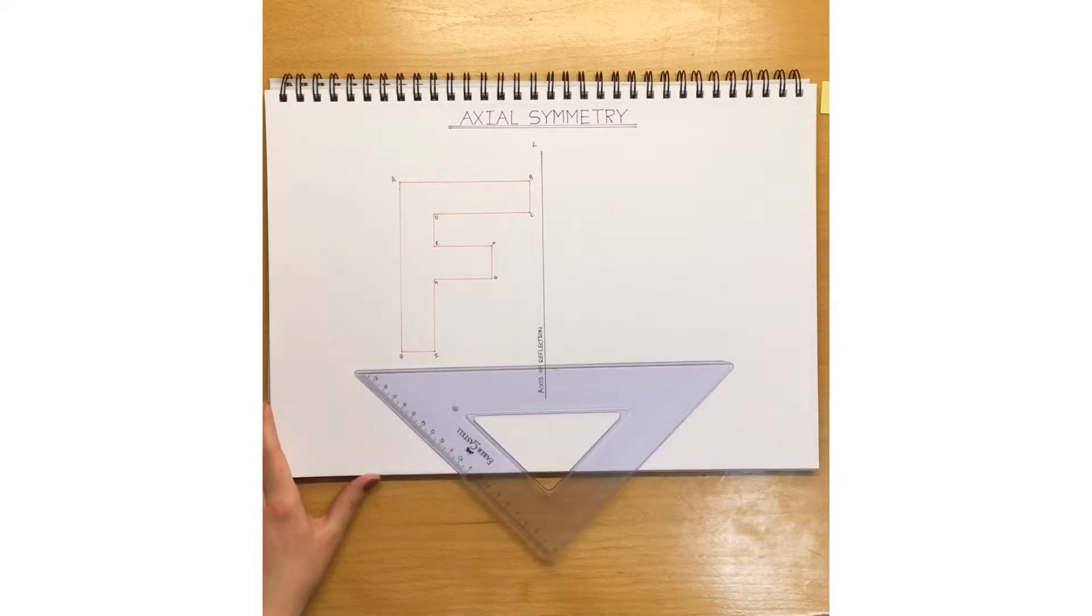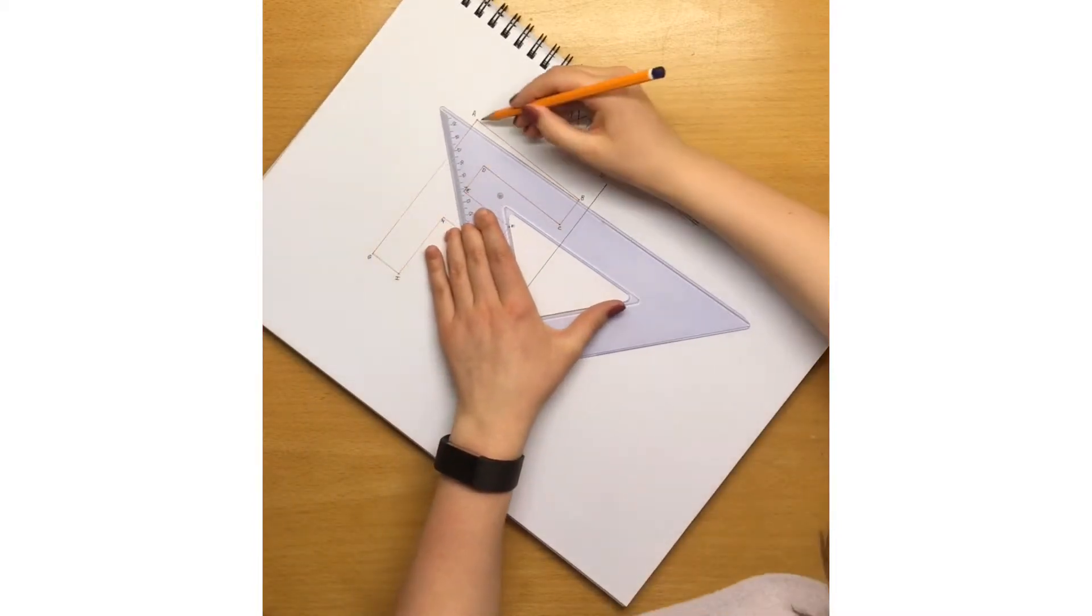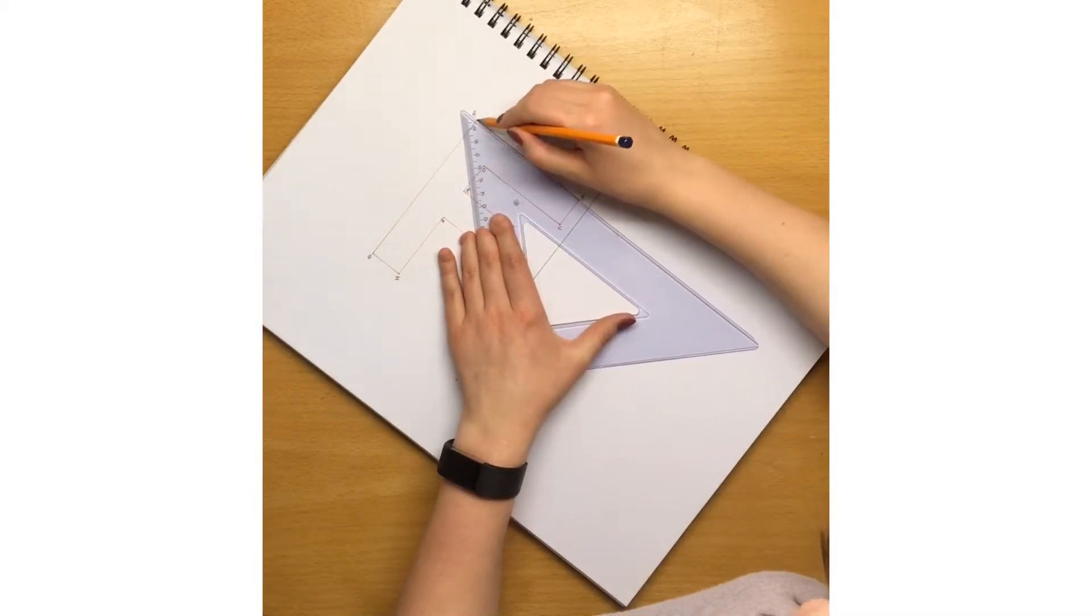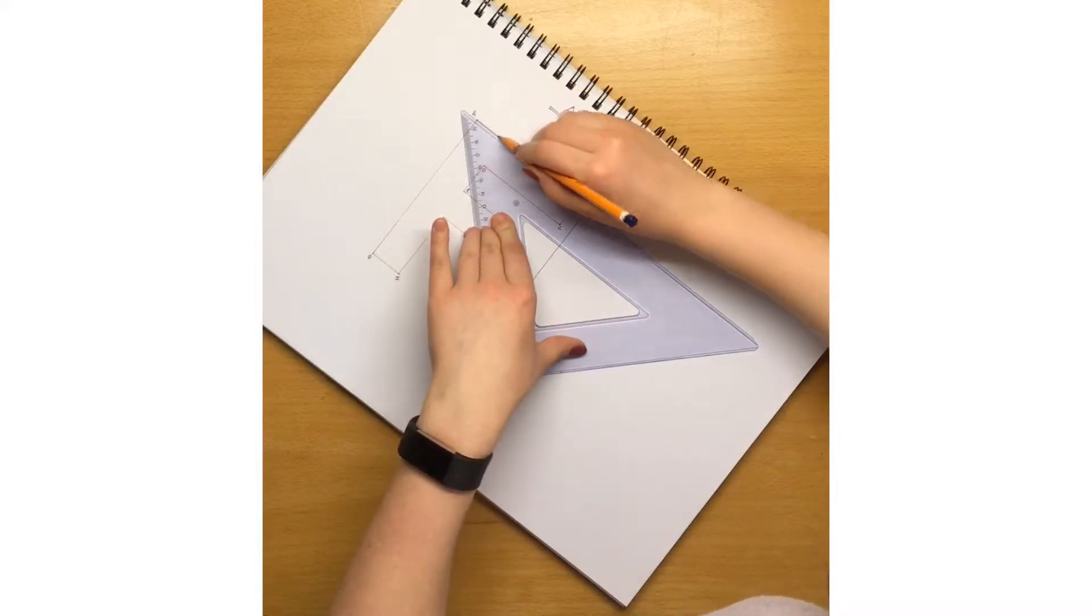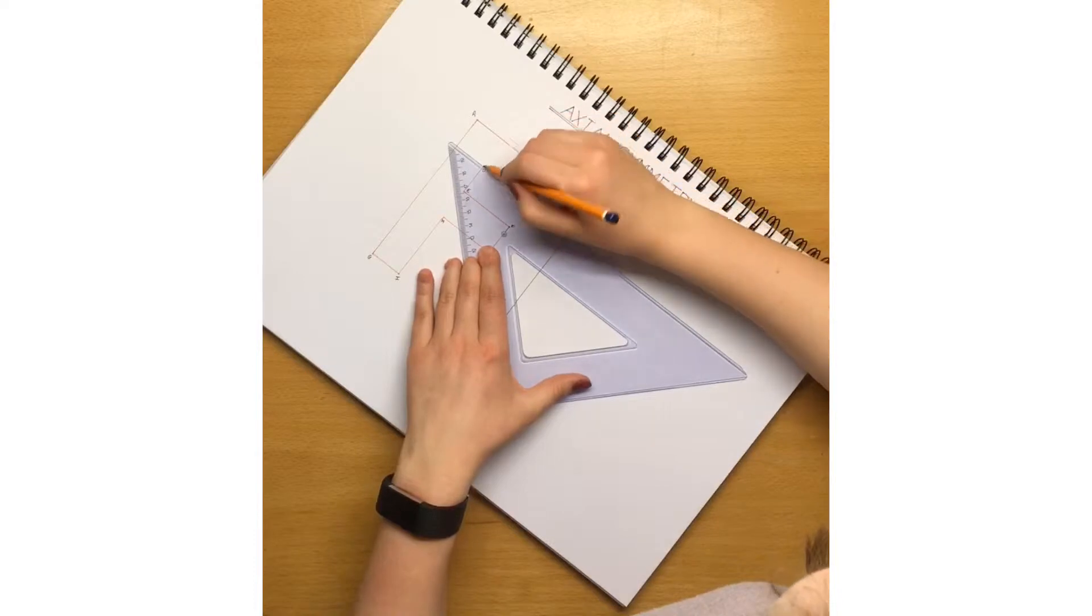So first, you need to bring all your lines across the axis of reflection. These are just construction lines, so keep them light.